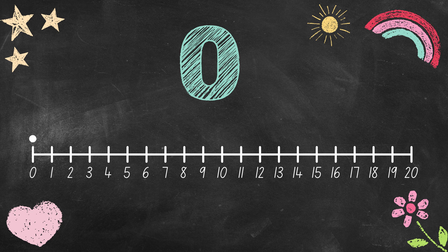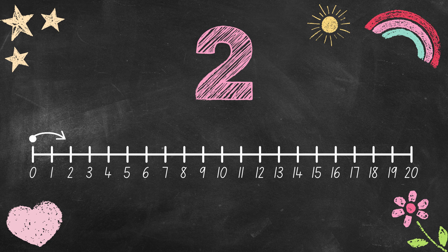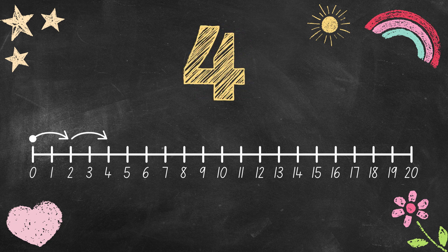Let's begin with 0. When we skip count by two, we jump over one number each time. That means, we will skip one and jump to two. Which number do you think will come next? That's right. Four.